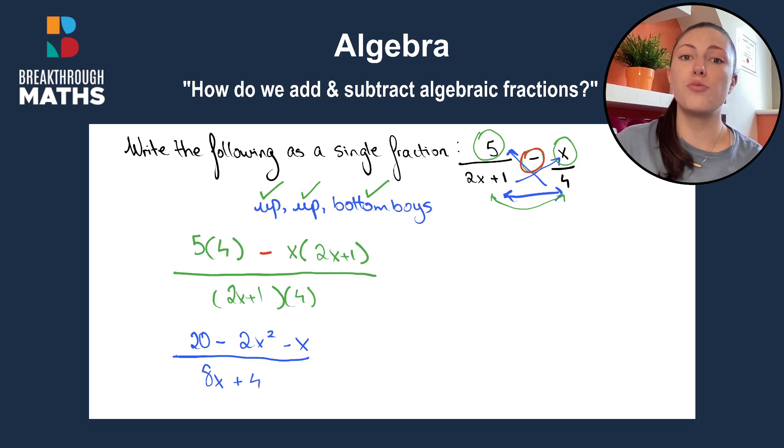And all we can do here is just reorder our answer to make it look a bit neater. So we're used to seeing our x squared first. We'll put minus two x squared first, then our x minus x, then our number plus 20, all over eight x plus four. And that's how we use algebraic fractions using addition and subtraction.